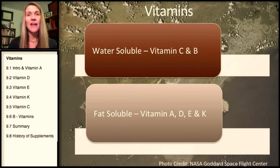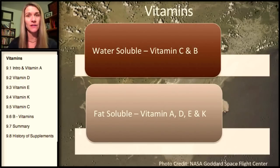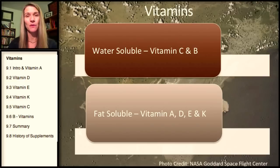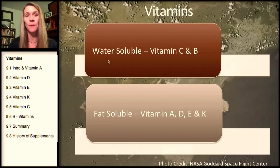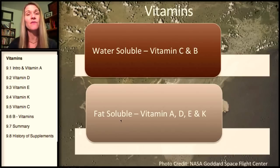First, we'll introduce the different categories of vitamins. Remember, micronutrients are both vitamins and minerals. Our vitamins come in both a water-soluble and fat-soluble group. Water-soluble vitamins are vitamins C and B, whereas the fat-soluble vitamins are A, D, E, and K.